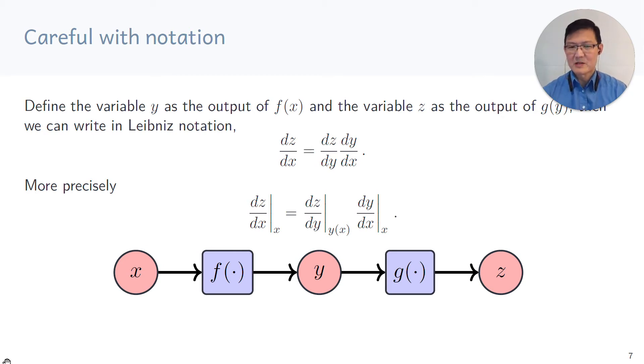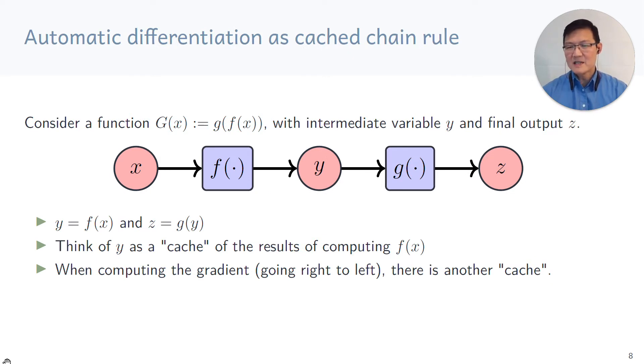We need to be a little bit more precise about notation here when we're looking at the compositions of functions f and g. Let us fully write out the variables x, y and z such that y is the output of f of x and z is the output of g of y. Then we can write the chain rule in the following way using Leibniz notation. If you look at this chain rule, the term in the middle, the dz dy, this actually needs a value of the intermediate variable y. We can think of the variable y as a cache of results from computing f of x.